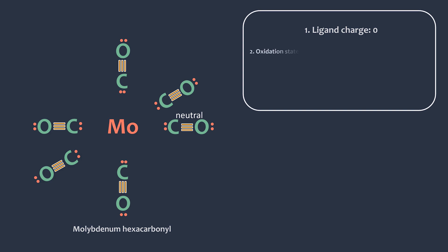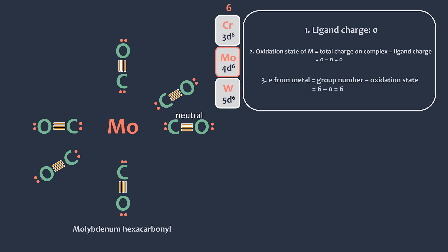The oxidation state of metal is equal to the overall charge minus the ligand charge. And here, it is zero. Next, the electron from metal center is equal to the group number minus the oxidation state. Since molybdenum is in group 6, and its oxidation state is zero, the electron from molybdenum is 6.